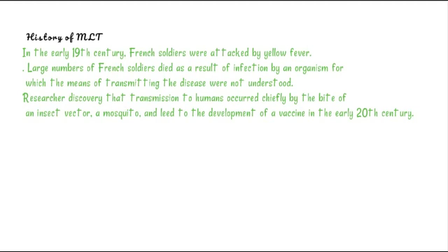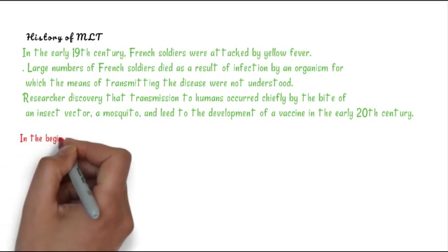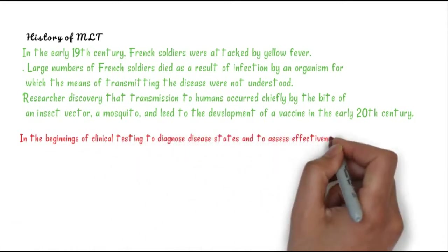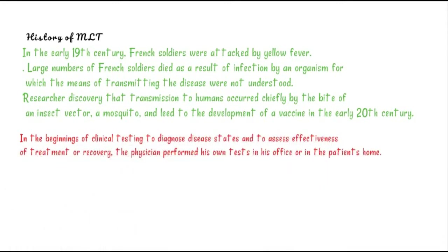But researchers at that time found that transmission occurred chiefly by the bite of insect vectors - mosquitoes - and finally they developed some vaccines in the early 20th century. In the beginning of health testing, we only did diagnosis of diseases and assessed the effectiveness of treatment. The physician performed his own tests in his office or at the patient's home.